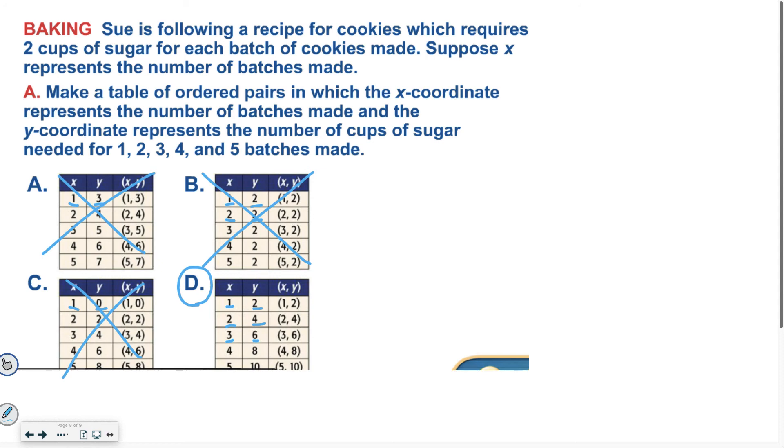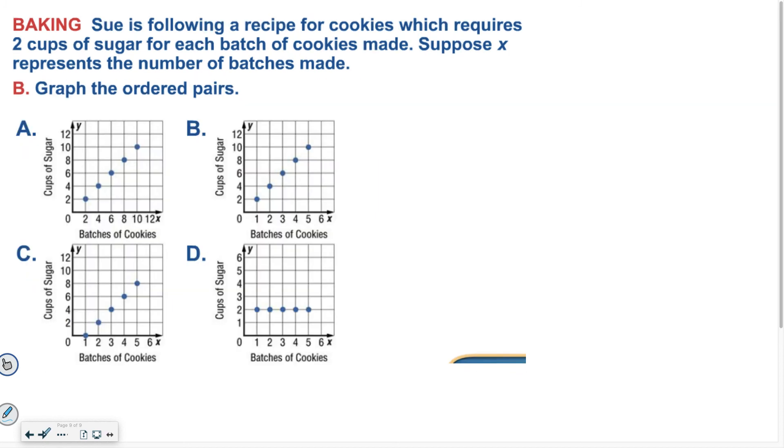Then that means on the next page, we're going to look for the graph that matches these ordered pairs. So which graph shows the amount of sugar needed for this problem? Good luck. Hopefully, you said letter B. You said one batch of cookies is two cups. Two batches is four. Three is six. Four is eight. And five is ten.